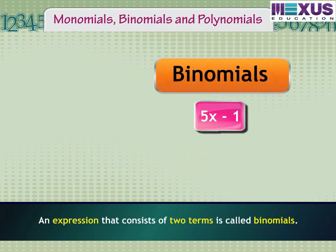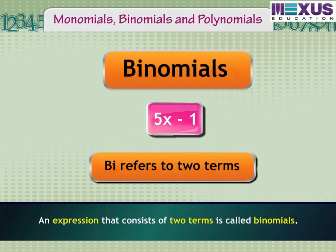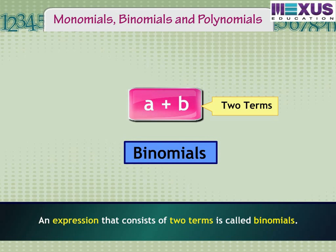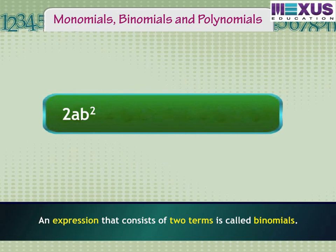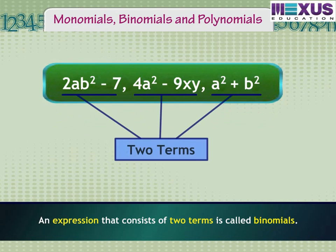Now let us learn about binomials. An expression that consists of two terms is called a binomial. Here 'bi' refers to two terms. For example, a plus b has two terms — a and b — with an operation between them, so it is known as a binomial. More examples: 2ab squared minus 7, 4a squared minus 9xy, and a squared plus b squared each have two terms, so they are referred to as binomials.